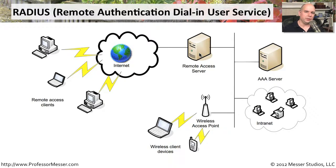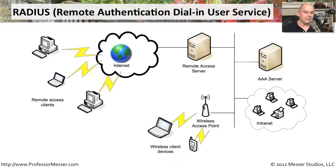That remote access server receives your username and password and uses the RADIUS protocol to communicate to a AAA server, which checks against a centralized database to see if your username and password match. If they do, it sends a message back to your remote access server to grant you access. If you're using WPA2 Enterprise or 802.1x, you may be authenticating onto wireless access points, which can also use the RADIUS protocol to talk back to the AAA server. Because it's the same AAA server, you can use the same username and password for dial-in as for your wireless clients.